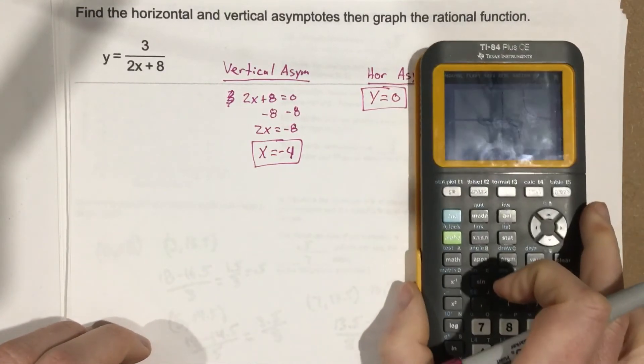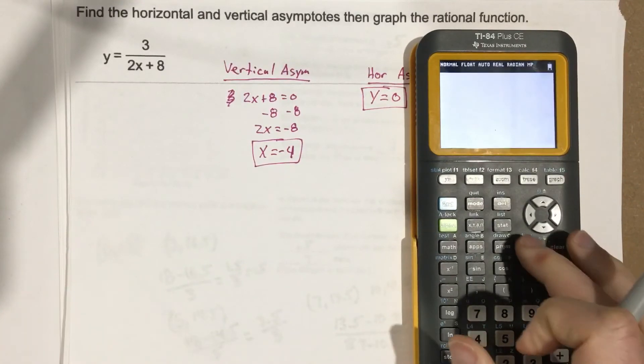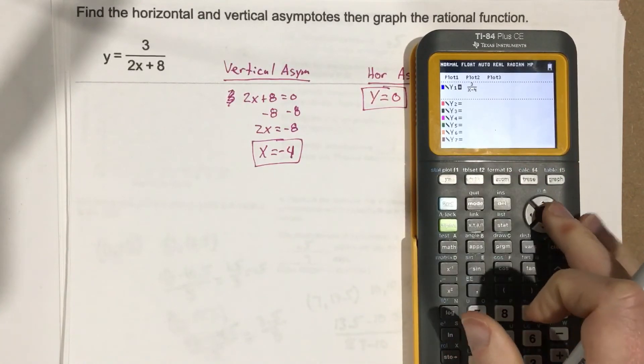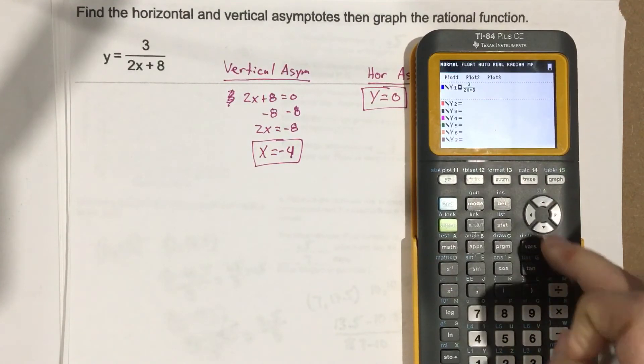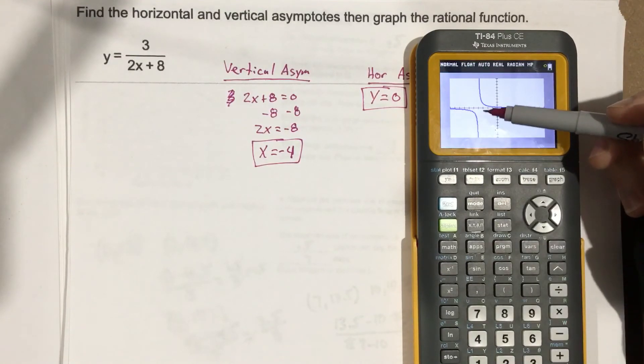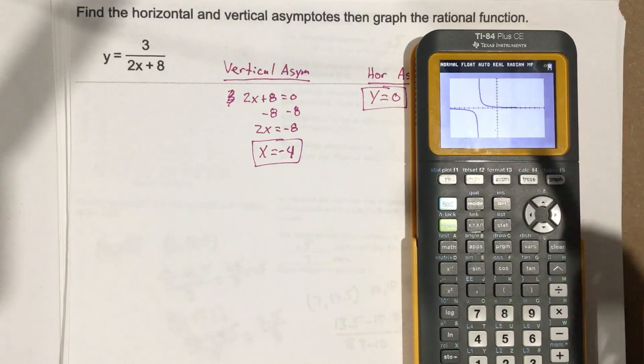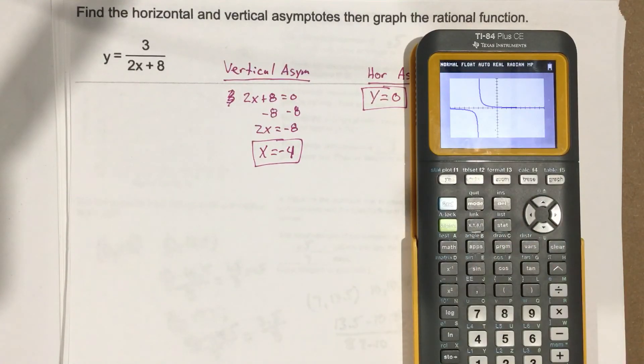Now they want us to graph it. Let's go ahead and graph it and see what that looks like. We're going to put in 3 over 2x plus 8. And let's graph it and look, right here at negative 4 you can see we've got a vertical. And then obviously at the x-axis is also our horizontal.